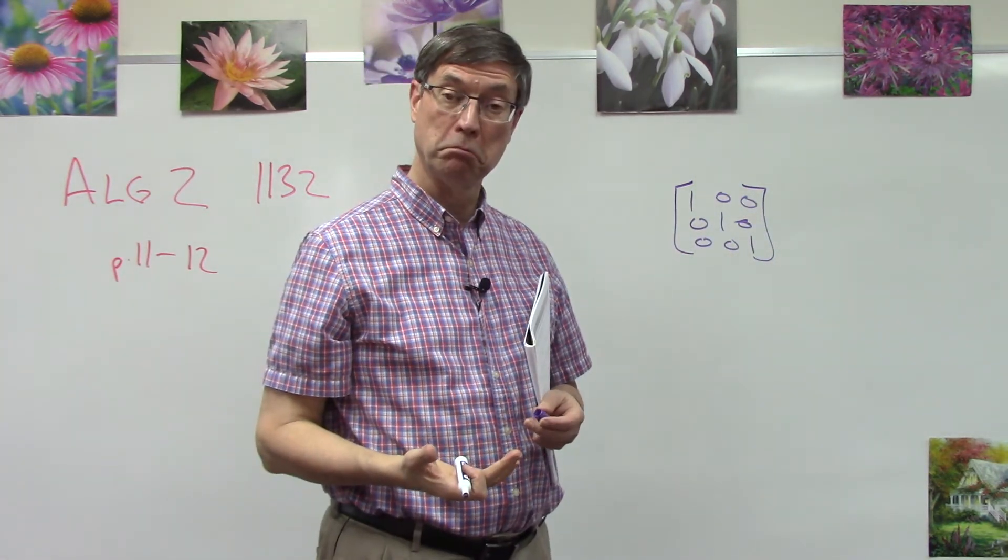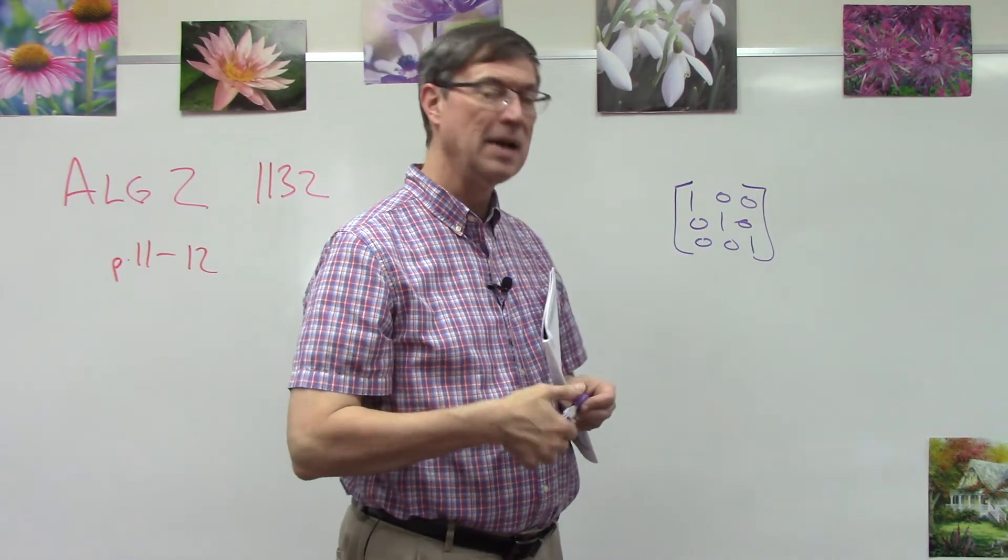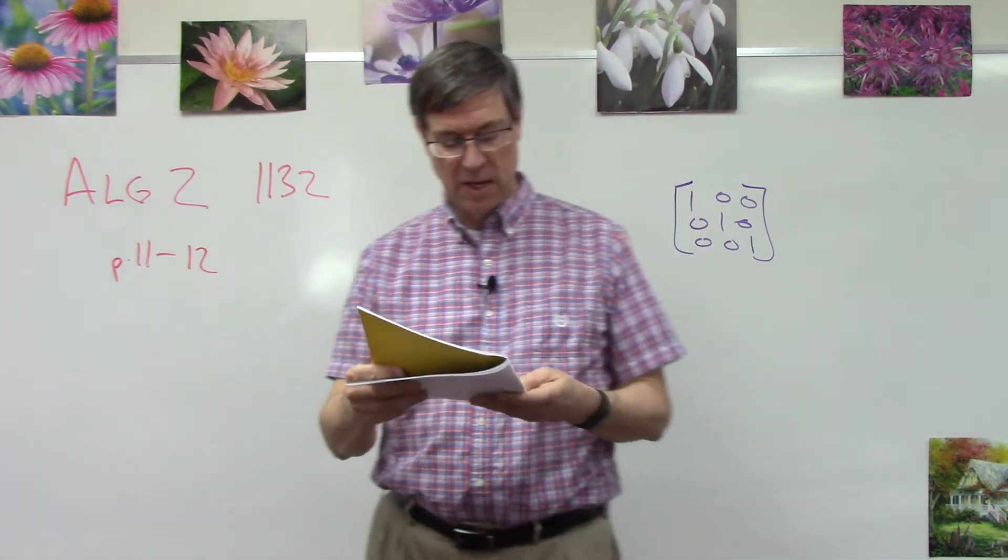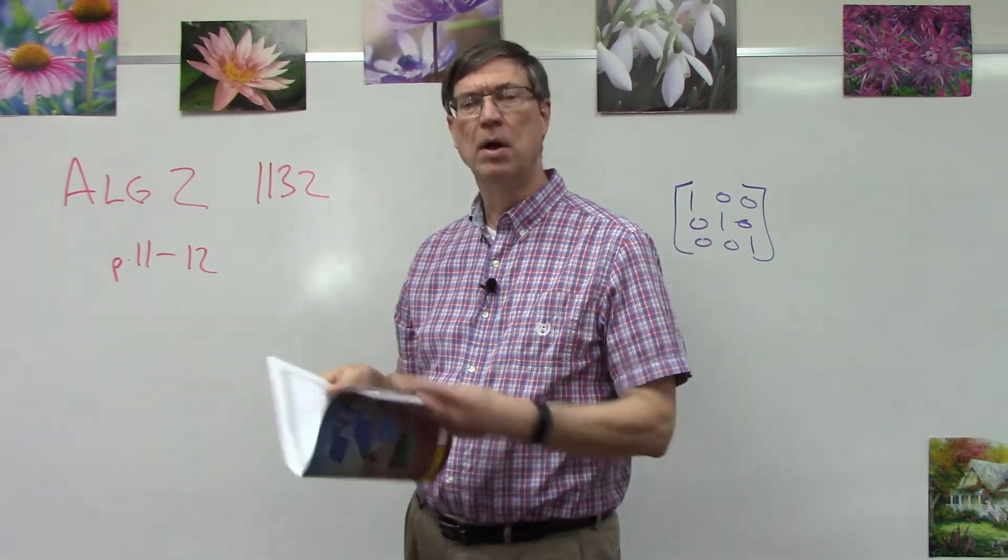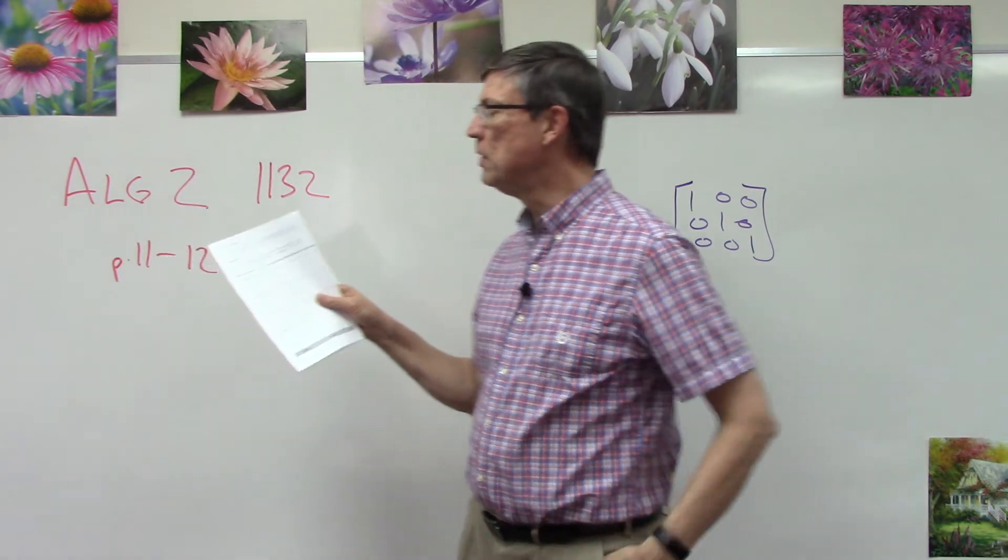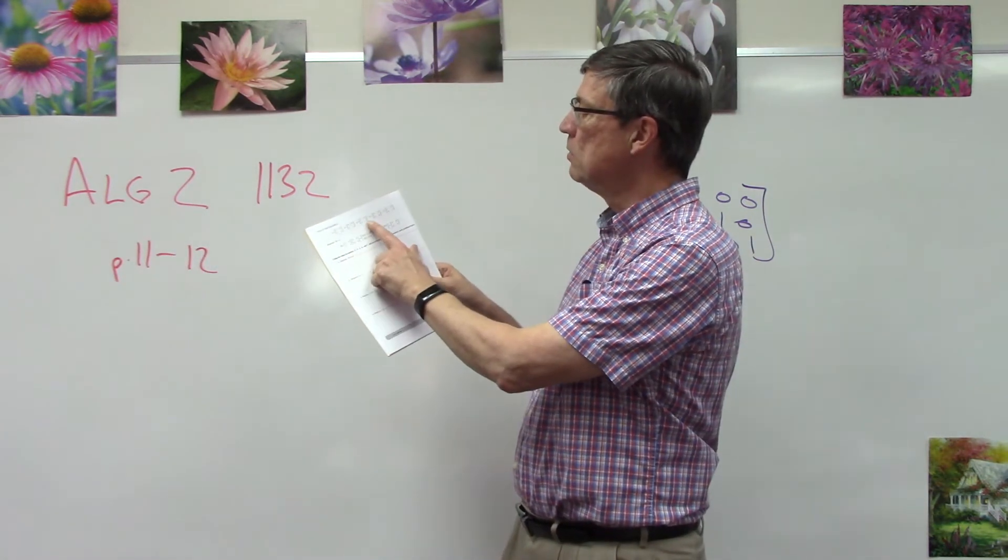That's called the identity axiom, and then they have the zero axiom. Now what they're going to do if you look here at page 12 is they give you some examples up here, some two by two matrices that you're going to use.